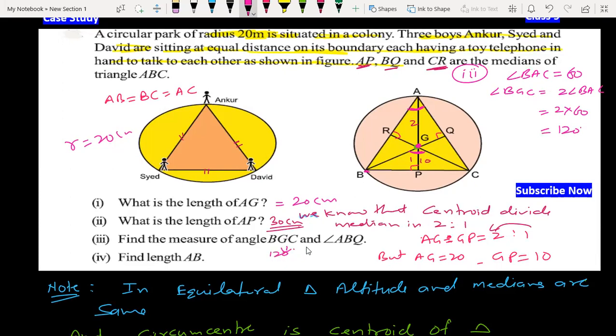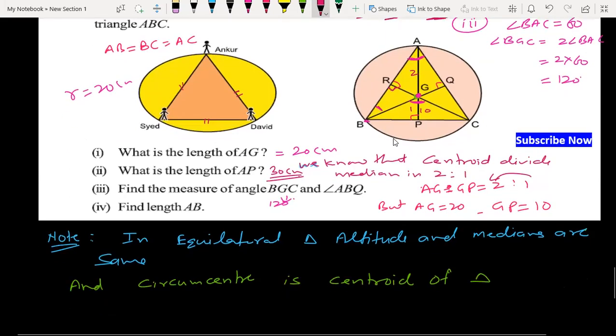And now to find angle ABQ. As I told you above, this is altitude. In triangle ABQ, this angle is 90. Angle A is 60, angle Q is 90, so by angle sum property, angle ABQ is 30 degrees.